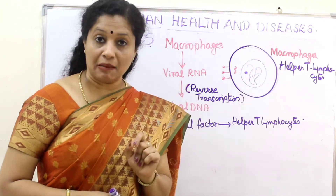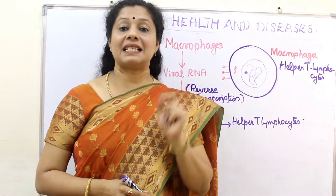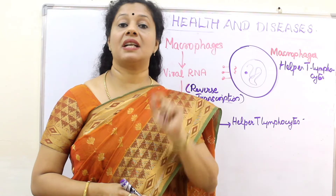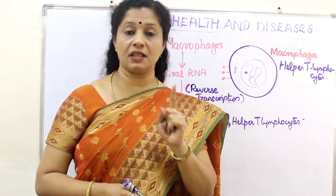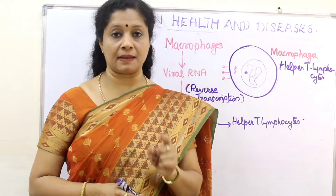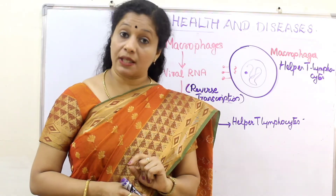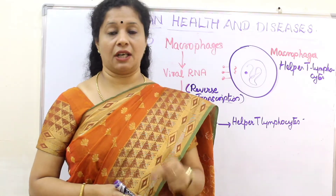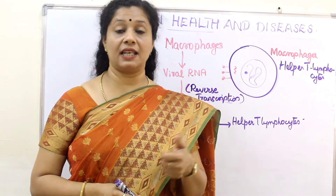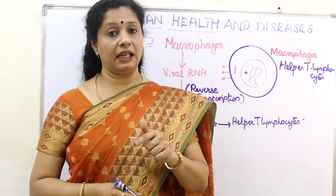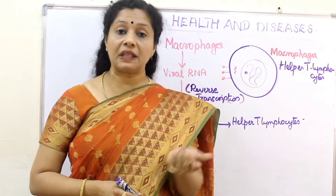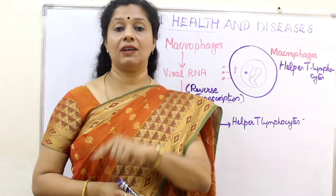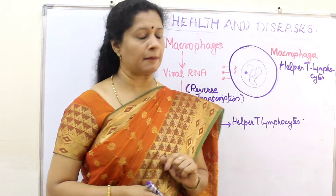This is a very important question: which cells are attacked by HIV after entering our body? The first is macrophages, and then helper T lymphocytes — because after multiplying in macrophages, they will target helper T lymphocytes. The macrophage has certain receptors on its surface called CD4 receptors, and these receptors can bind the HIV.